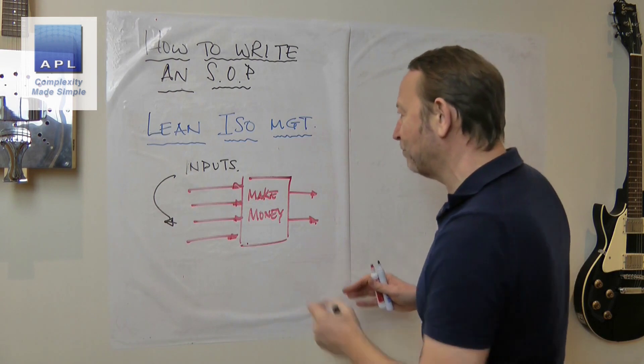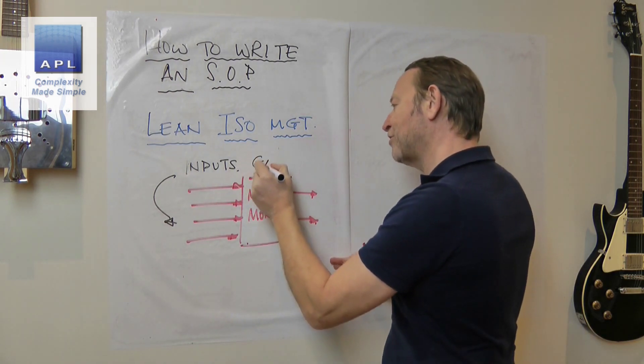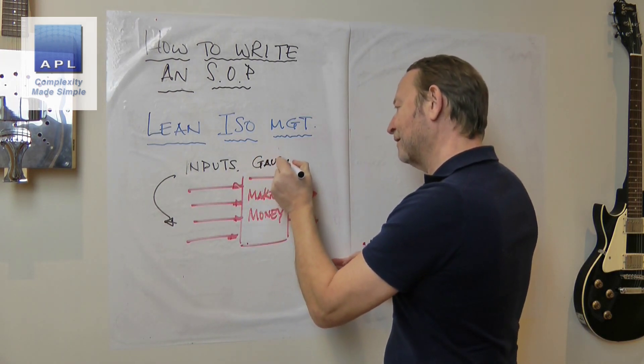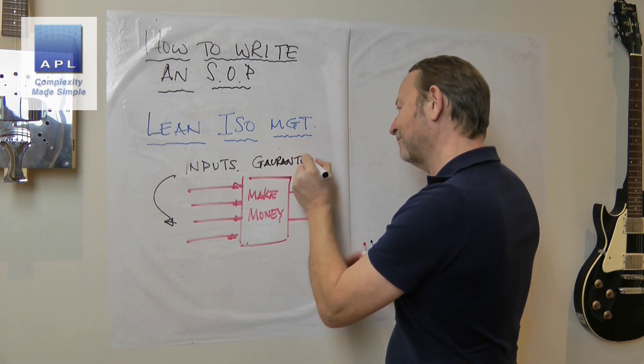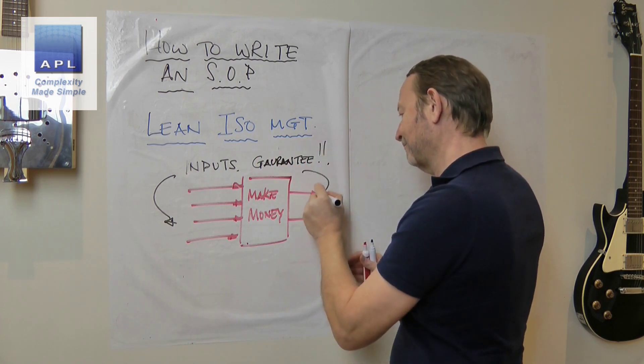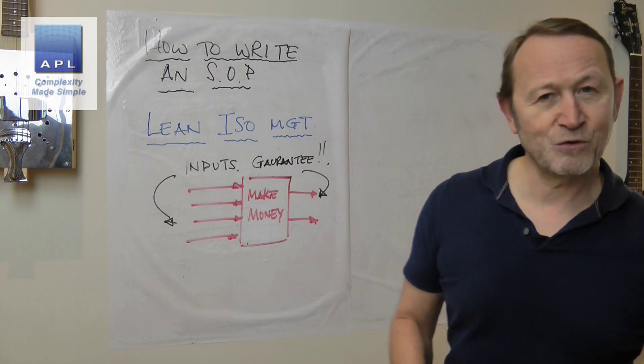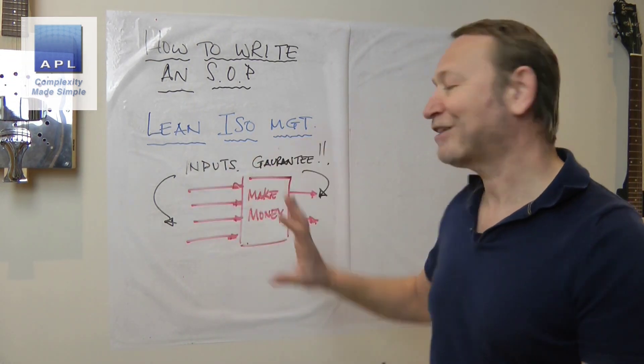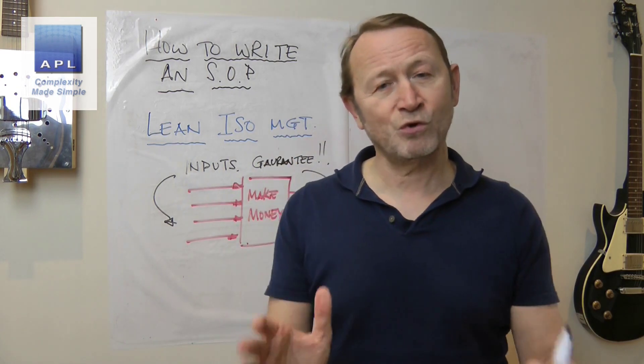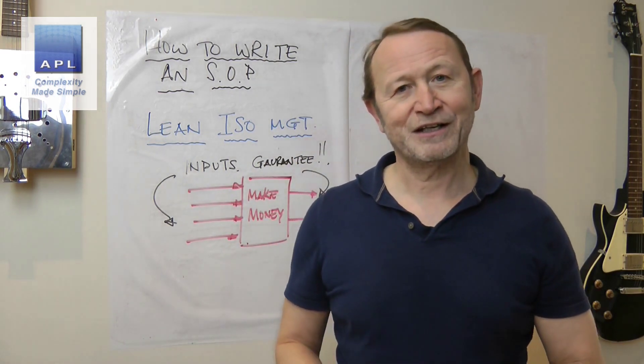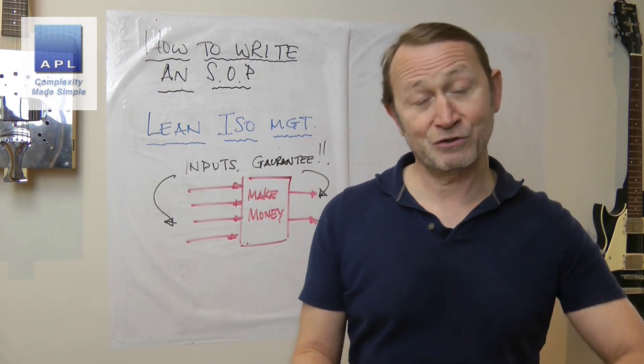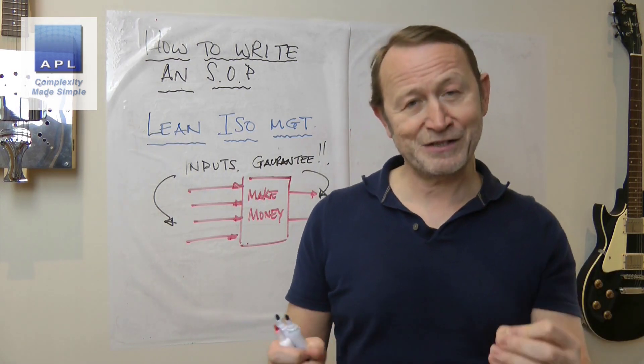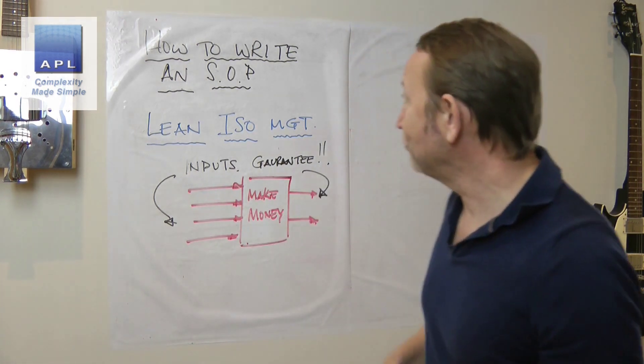You have inputs, you have outputs. The only way to control a process is to control the inputs which then guarantee that the outputs are where you want them to be.